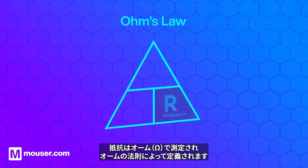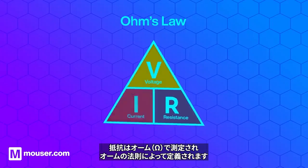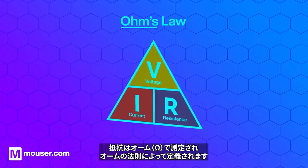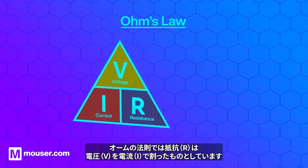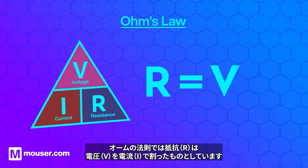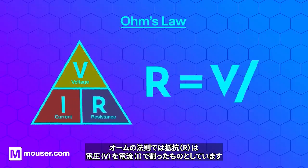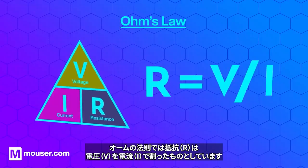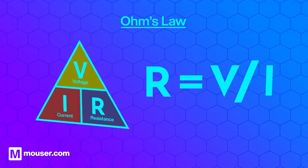Resistance is measured in ohms and is defined by Ohm's law, where resistance, R, is equal to voltage, V, divided by current, I.